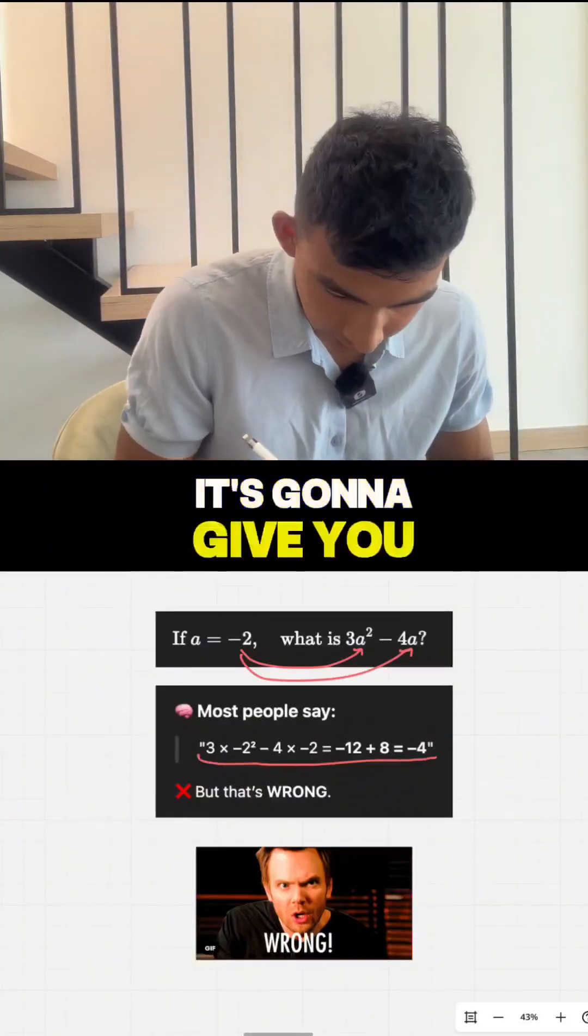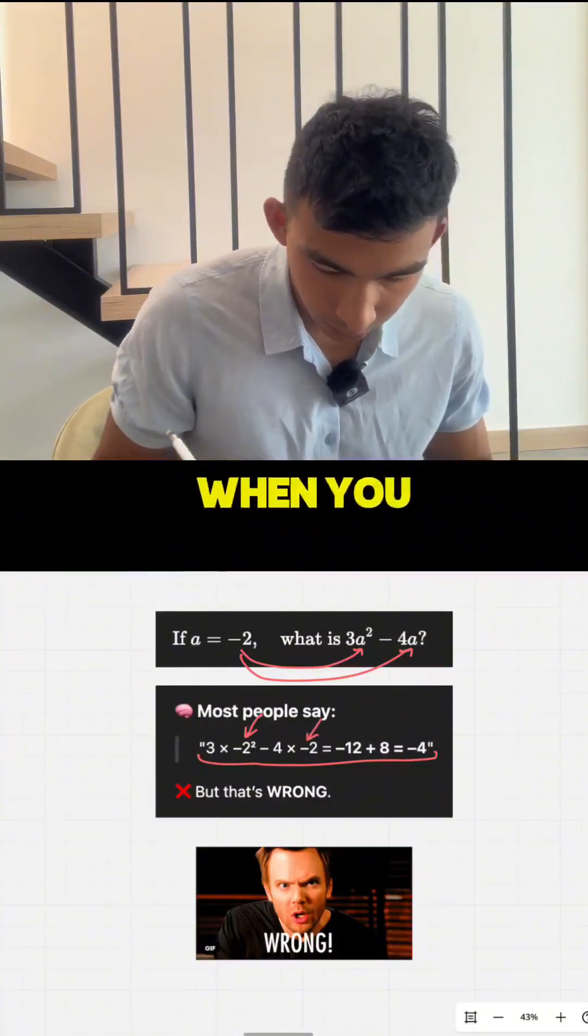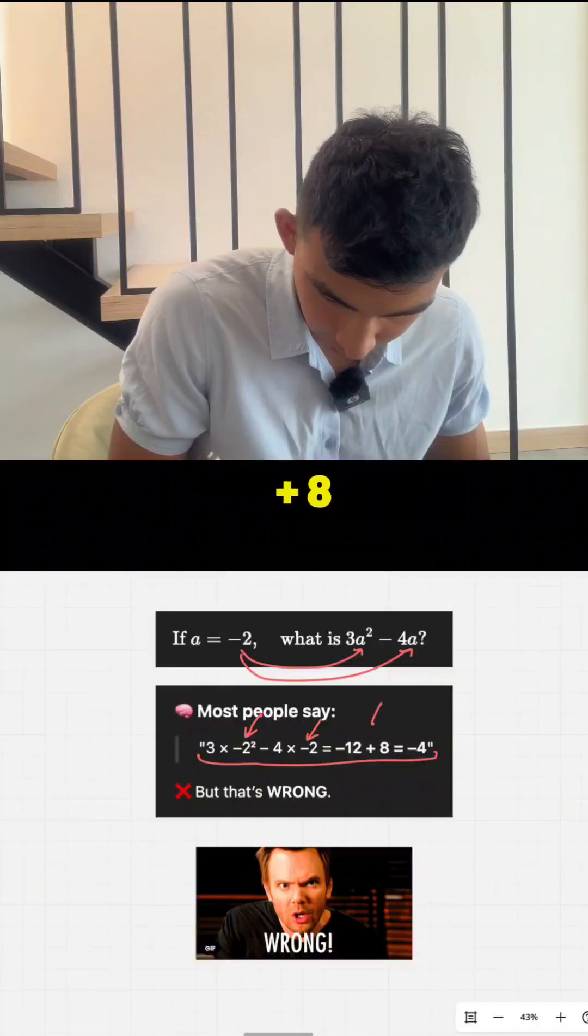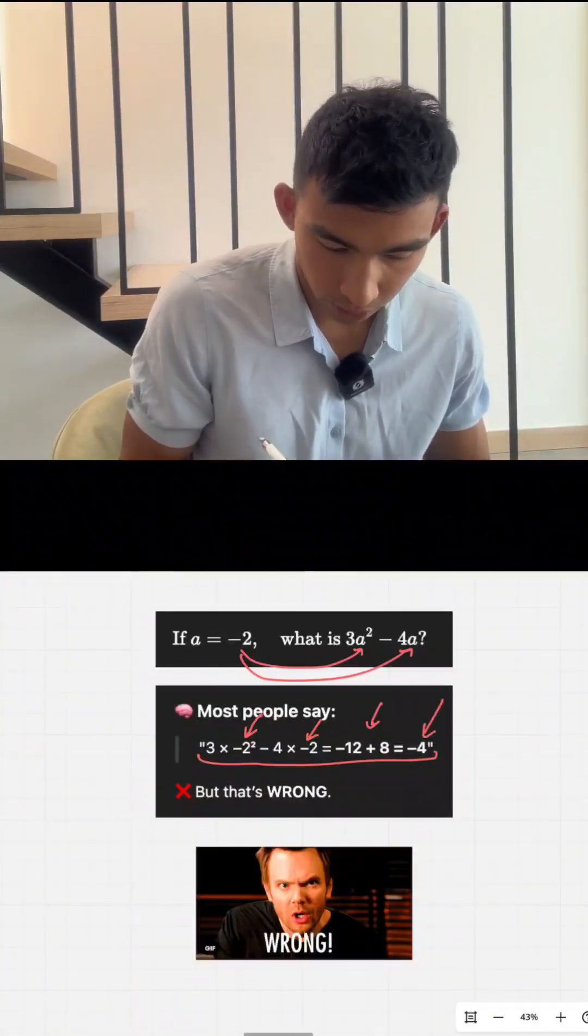So when you sub it in, it's going to give you here, you got 3 times minus 2 squared, minus 4 times minus 2 as well. When you simplify it, you'll get minus 12 plus 8. And then in your calculator, or if you simplify it manually, you'll get minus 4.